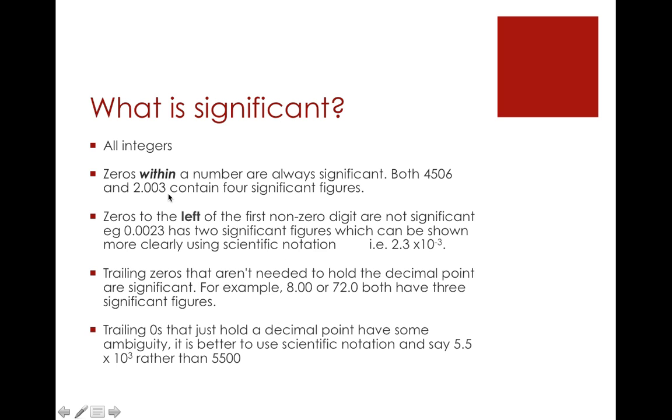What is not significant though are zeros that are not needed—they're just telling us how big it is. If we use scientific notation, those zeros disappear. Zeros to the left of the first integer are never significant. So this number here has only two sig figs, and we could write it as 2.3 times ten to the minus three, which would clearly show two sig figs.